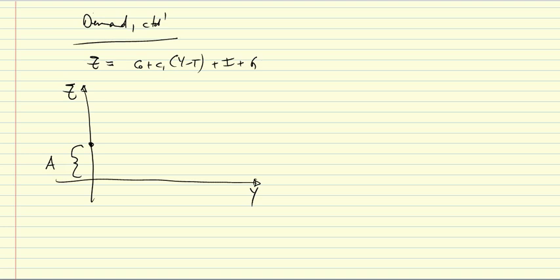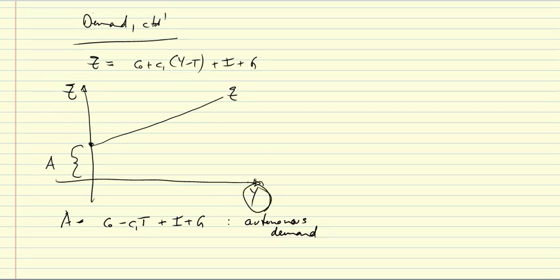And then we have a part that varies with income, and that is an upward sloping straight line. So, what are these then specifically? What is A, for example? A is, of course, equal to C0 minus C1 T plus I plus G. This is the autonomous demand. Autonomous means that it is independent of income, this Y here.